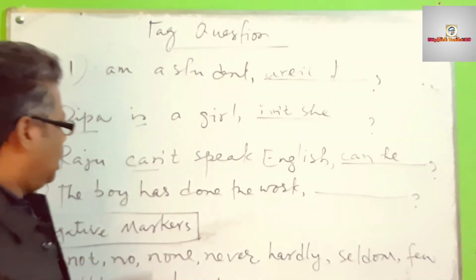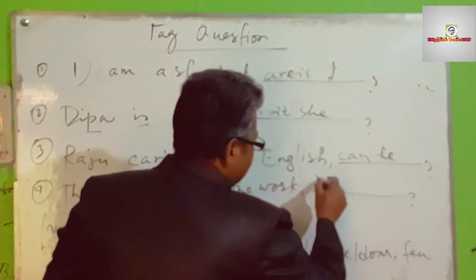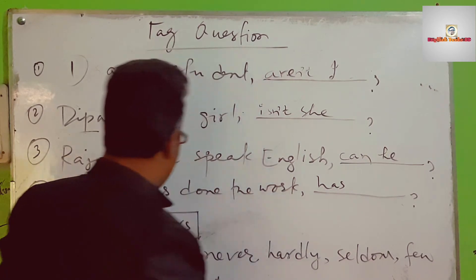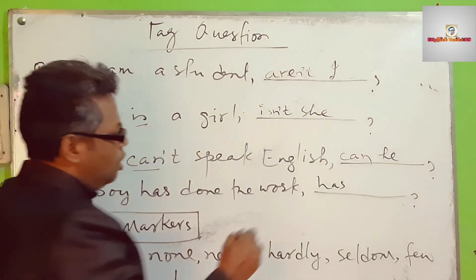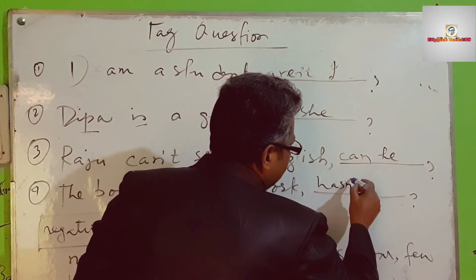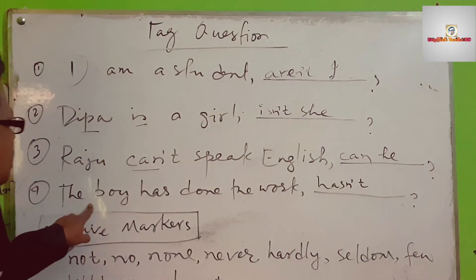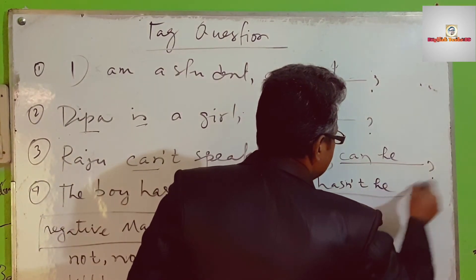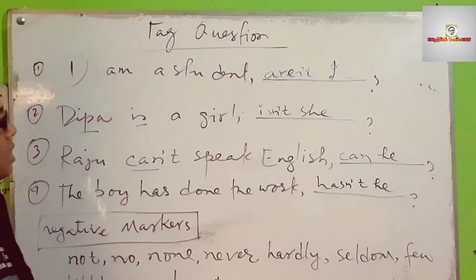The boy has done the work - what is the auxiliary verb? 'Has'. There's no negative marker, so the tag will be negative: hasn't he? The boy - the pronoun is 'he', hasn't he?